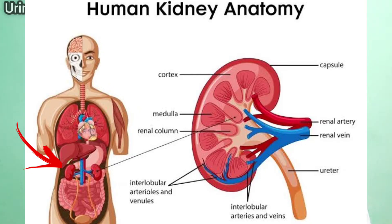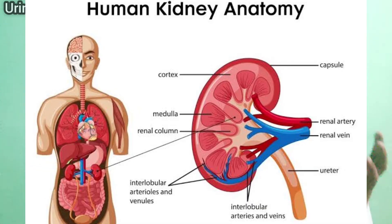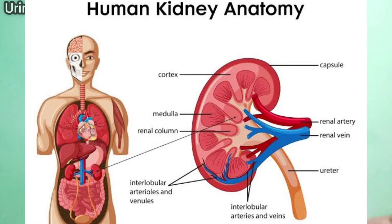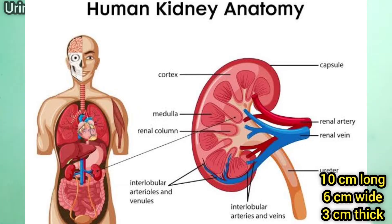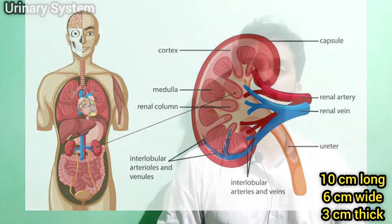The right kidney is positioned a little lower than the left, because the liver is present on the right side. If you look at the size of the kidney, it is 10 cm long, 6 cm wide, and 3 cm in thickness — roughly the size of a bar of soap.